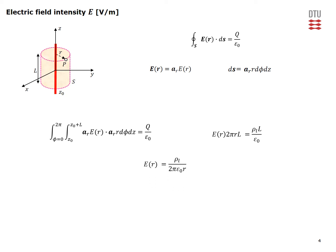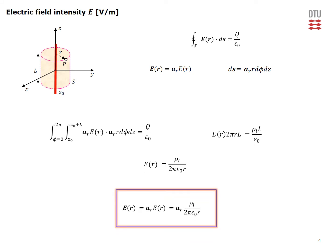Solving for the field magnitude gives the final vector result: the electric field is in the radial direction, directly proportional to the line charge density, and inversely proportional to the radial distance r from the line charge to the observation point.